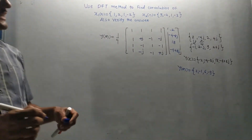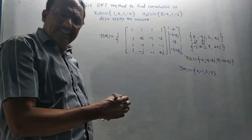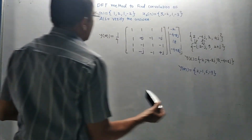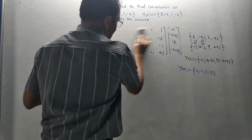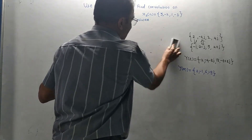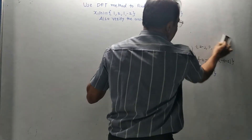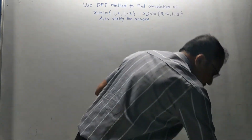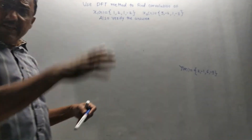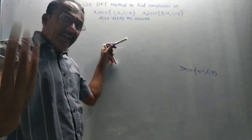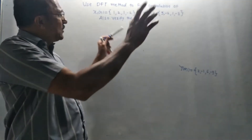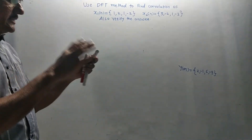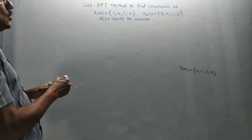This part is exactly the same as the last problem — only values differ. The remaining part is the verification. Since no specific verification method is mentioned in the question, we have a choice. Let us use the matrix method to verify the answer.